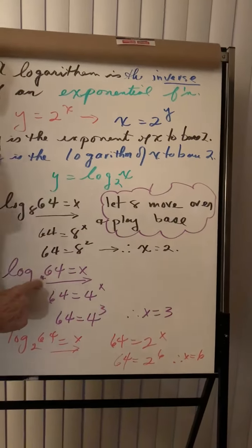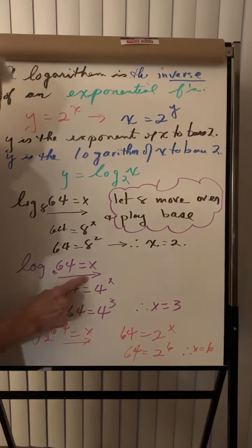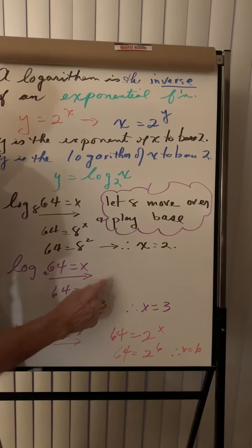Let's change the base to 4. Log of 64 to the base 4. Let 4 move over and play base. 4 cubed is 64.